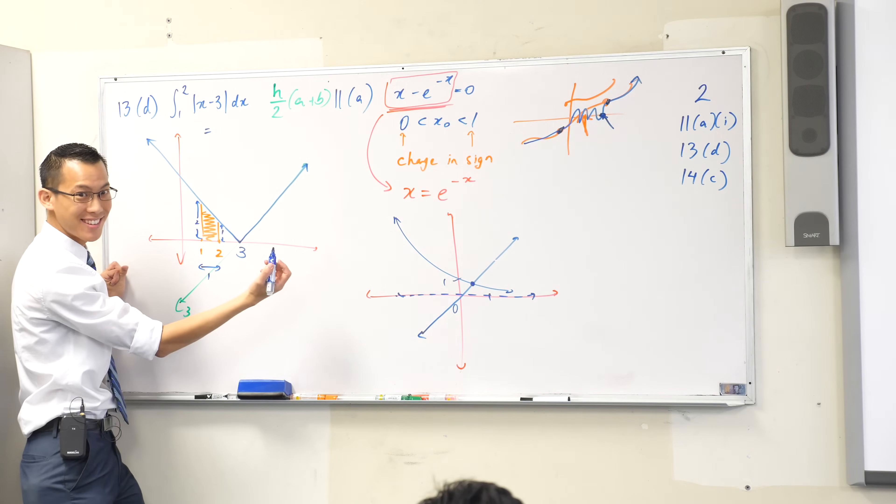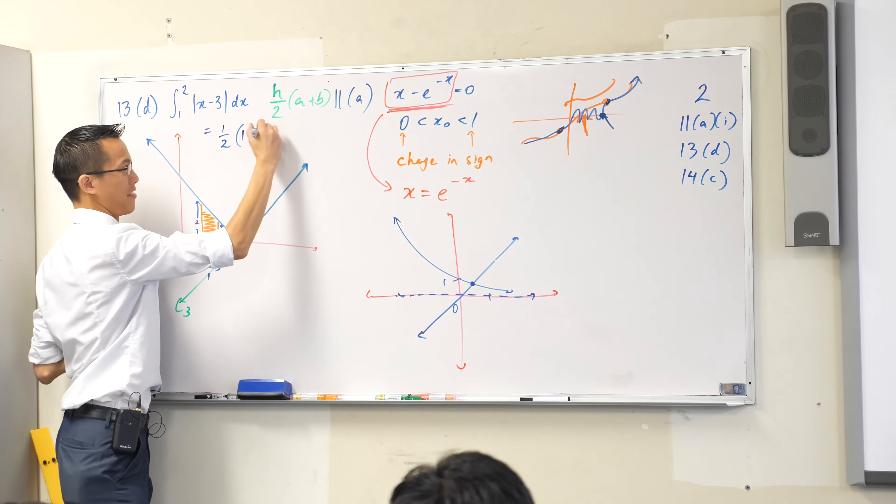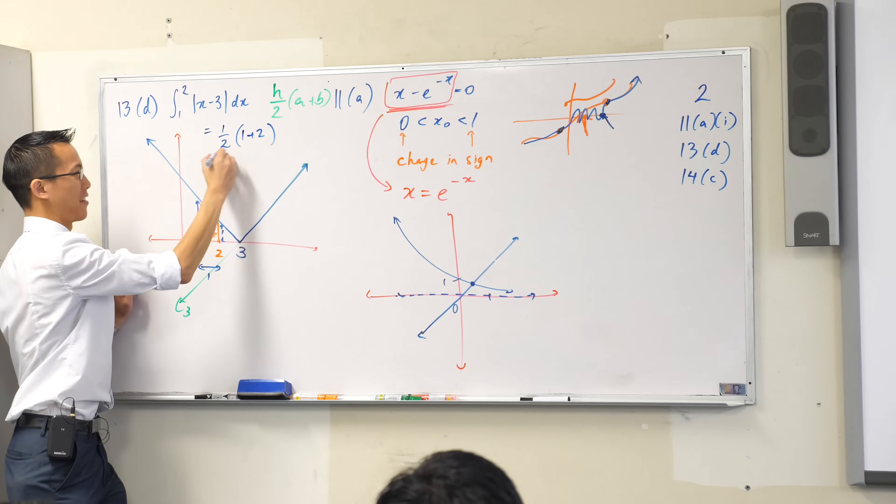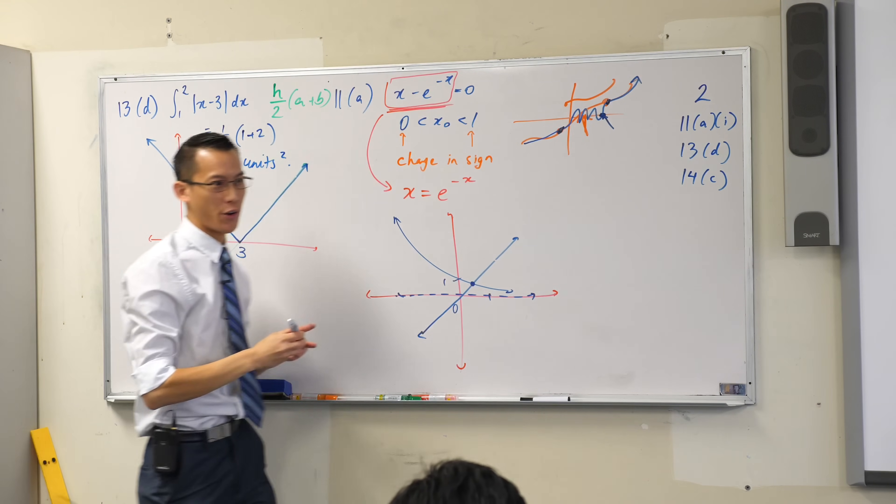h in this case is one, a plus b, there's my 3 over 2, and then I go home and don't cry.